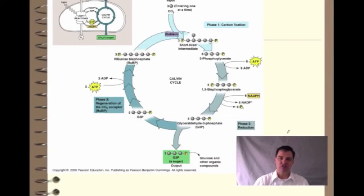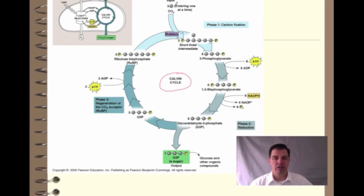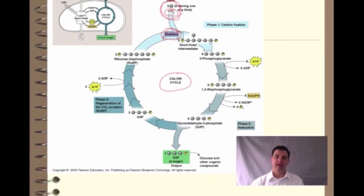Those reactions are important because we're going to take what we made there and use it to drive the next step, which is called the Calvin cycle, or the light independent reaction, or the dark reactions — because you don't need any light to do this. What happens is plants are going to take in CO2 from the atmosphere — a waste product that came out of cellular respiration — and that's going to go into the Calvin cycle using the enzyme Rubisco.